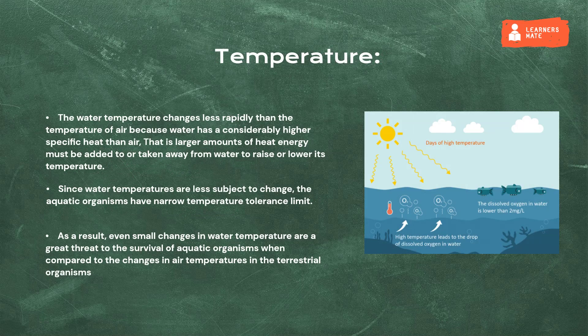Temperature: water temperature changes less rapidly than the temperature of air because water has a considerably higher specific heat than air — larger amounts of heat energy must be added to or taken away from water to raise or lower its temperature. Since water temperatures are less subject to change, aquatic organisms have a narrow temperature tolerance limit. As a result, even small changes in water temperature are a great threat to the survival of aquatic organisms compared to changes in air temperatures for terrestrial organisms.